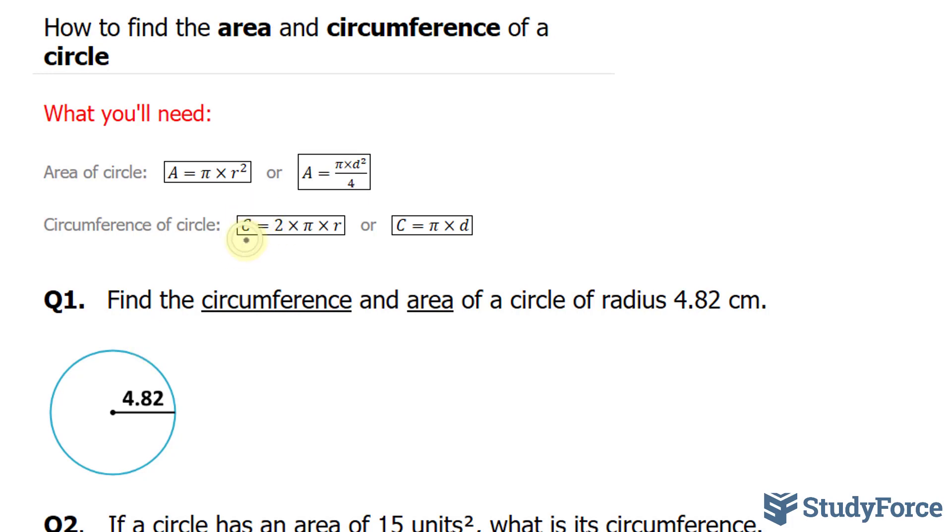The formula for circumference, we have two. We have C is equal to 2 times pi times r, or C, which represents circumference, is equal to pi times d. If you've been given the radius, you should use this formula. And if you're given the diameter, you should use this formula.